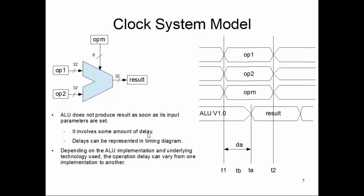It involves some amount of delay, and delays can be represented in a timing diagram. This is another component you need to understand very carefully. A timing diagram basically shows you the temporal relation between different signals - how the signal changes its value with respect to time. For that, the vertical line we draw is basically a time point. Maybe this is T1, this is T2, different points in time.